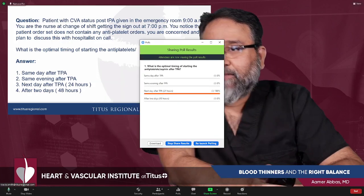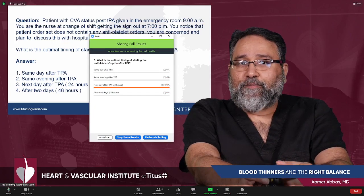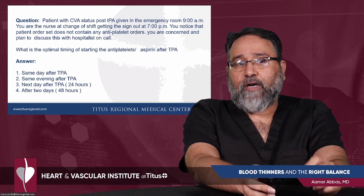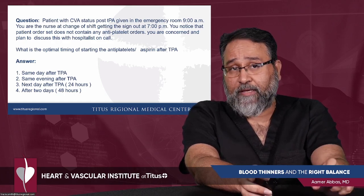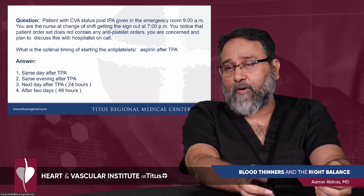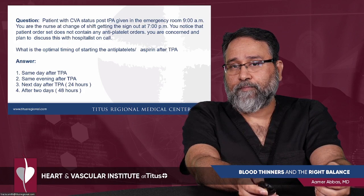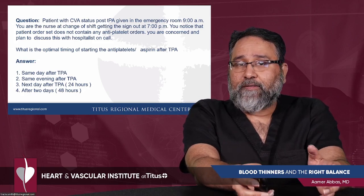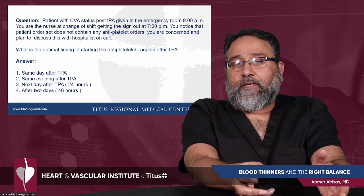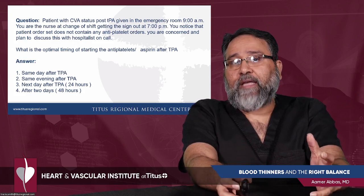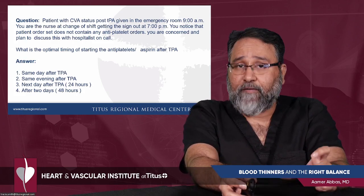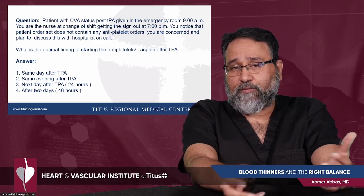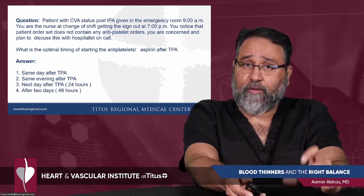The correct answer is: aspirin should not be given within the first 24 hours, and if someone has written that order, it needs to be caught and changed. Aspirin must be given after 24 hours of TPA — a very important point. On the same topic, neurologists also prefer not to use any subcutaneous heparin or Lovenox for DVT prophylaxis during that first 24-hour period. Be aware of this — if you see any deviation from that protocol, discuss with your hospitalist or neurologist within the first 24 hours after TPA administration.